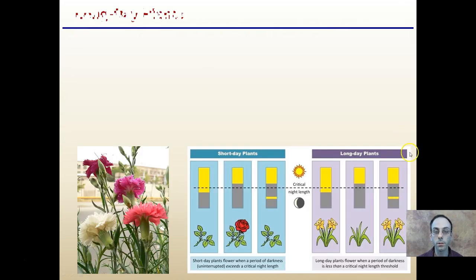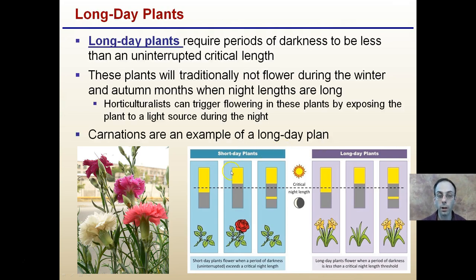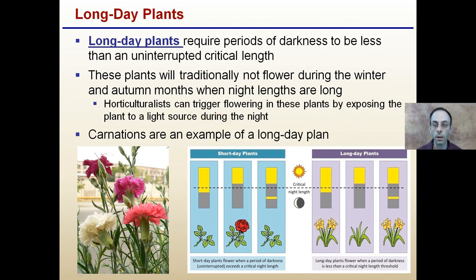Putting it together: long-day plants require periods of darkness less than the uninterrupted critical length. These plants traditionally will not flower during winter and autumn when night lengths are long. Horticulturists can trigger flowering in long-day plants by exposing the plant to a light source during the night, breaking apart the continuous hours of darkness. Carnations are an example of a long-day plant.